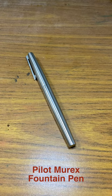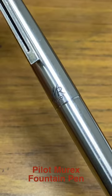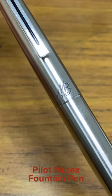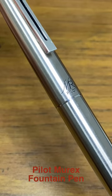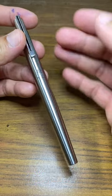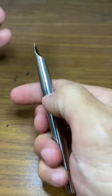What's up guys, welcome back to Pen and Journal. Today we're going to do the Pilot Murex review. This pen was made by Pilot in the 1970s. It's an all metal stainless steel pen.